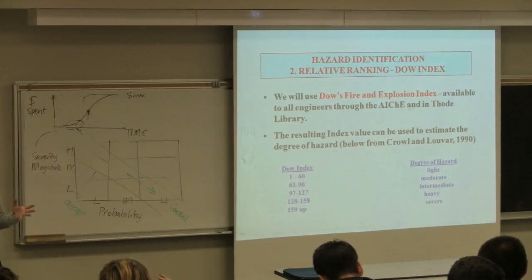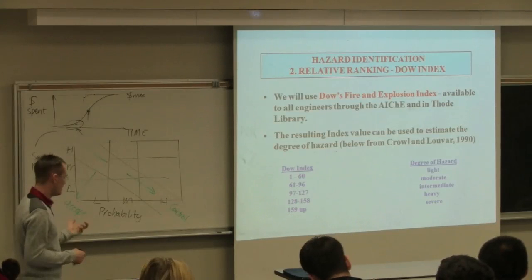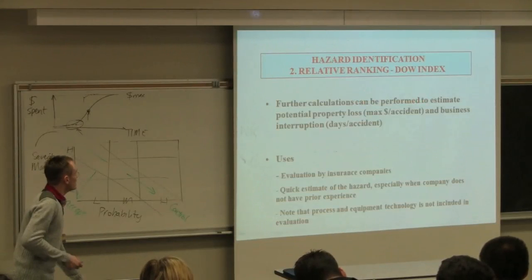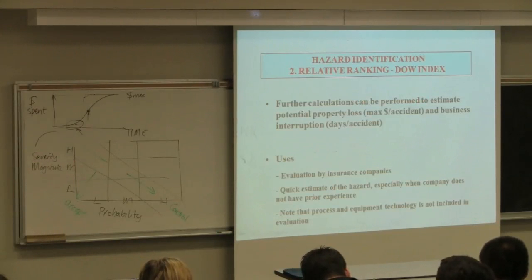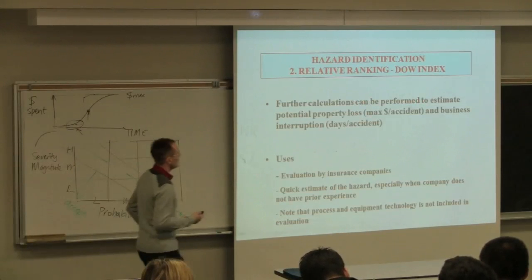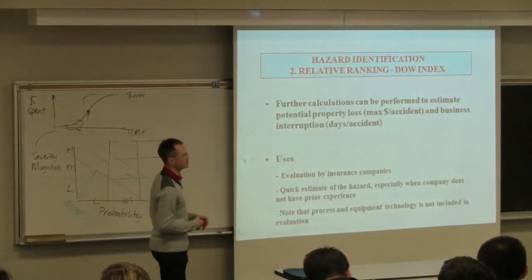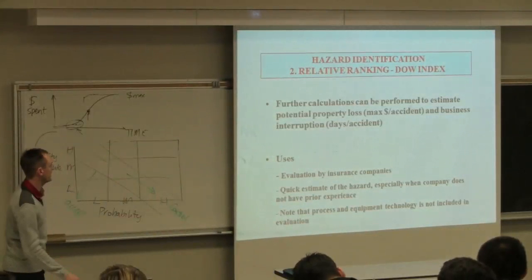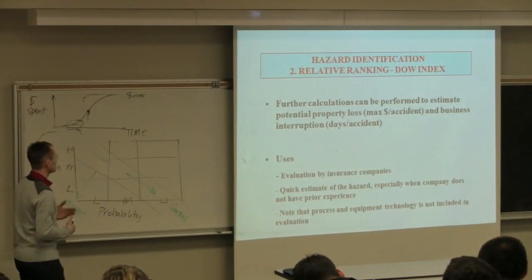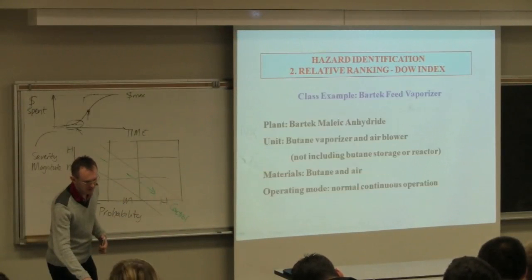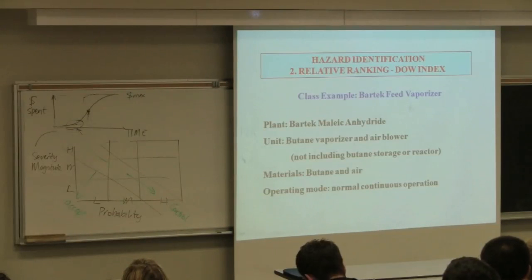What we'll do is we'll take our flow sheet and divide it up into regions that coherently work together. We'll perform the ranking for that region of the flow sheet. Then that gets us a sense of what the level of hazard is in that area of the flow sheet. If the hazards are unacceptably high, we can quite easily interchange the technology in that region with some alternative. Let's take a look at a company in Stoney Creek. They make maleic anhydride.